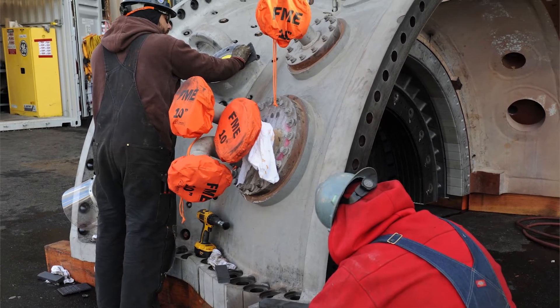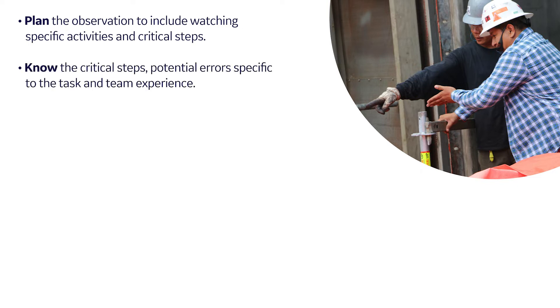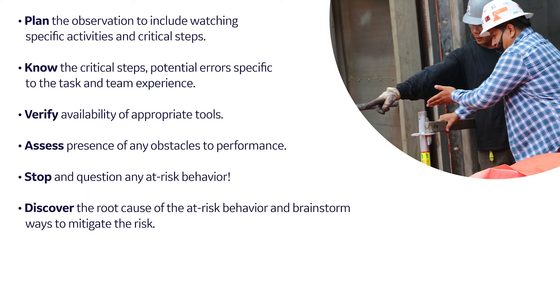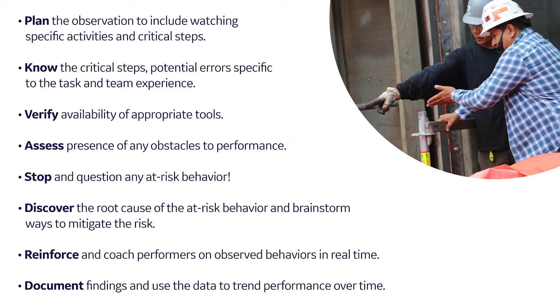Here are a few recommended practices you should follow for the best outcomes. Plan the observation to include watching specific activities and critical steps. Know the critical steps, potential errors specific to the task, and your team's experience with the task, and include these items in the scope of the observation. Verify availability of appropriate tools. Assess presence of any obstacles to performance. Stop and question any at-risk behavior. Discover the root cause of an at-risk behavior and brainstorm ways to mitigate the risk. Reinforce and coach performers on observed behaviors in real time. Document findings and use the data to trend performance over time.